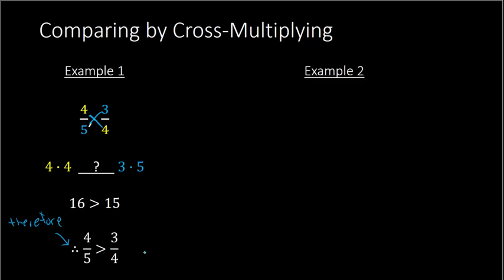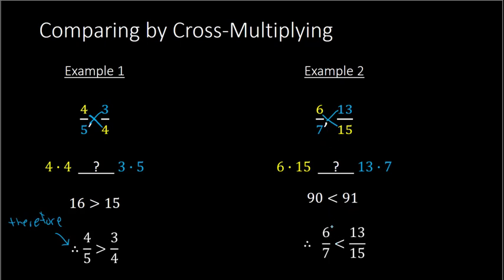Let's try another one. Here we had 6 over 7 and 13 over 15. So again, what we do is we multiply across. Multiply across 6 times 15, and then we multiply across where we have 13 times 7. So 6 times 15 and 13 times 7 are the numbers we're comparing. 6 times 15 goes on the left side, and 13 times 7 goes on the right side. 6 times 15 is 90, 13 times 7 is 91. We compare those two numbers, and 90 is less than 91. So therefore, 6 over 7 is less than 13 over 15.